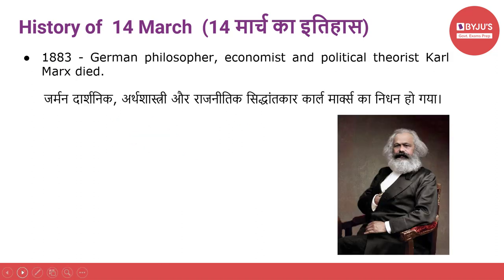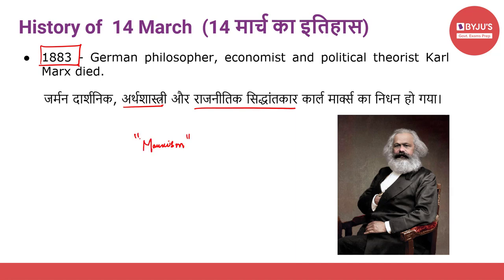Moving to the next important event: in 1883, German philosopher, economist and political theorist Karl Marx died. On 14th March 1883, Karl Marx — the German philosopher and founder of the politico-economic theory known as Marxism — died in London at the age of 64. इनका जन्म आधुनिक जर्मनी के शहर ट्रायर में 5 मई 1818 को हुआ था.